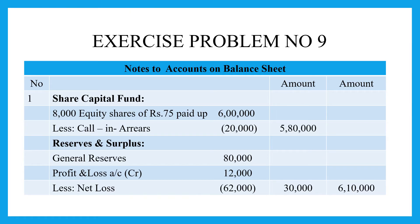Adding to reserves and surplus: we have a general reserve of Rs. 80,000, and a profit and loss account credit balance which is retained earnings. The net loss from this year's profit and loss account is Rs. 12,000. Since we have a loss, it is deducted rather than added.